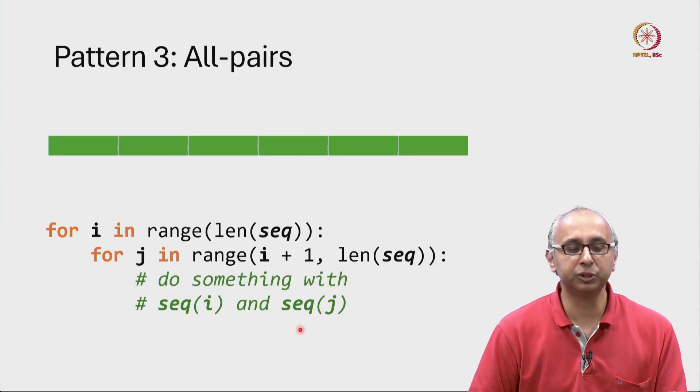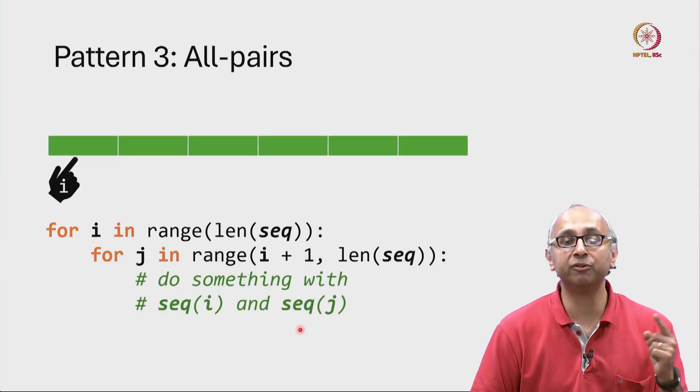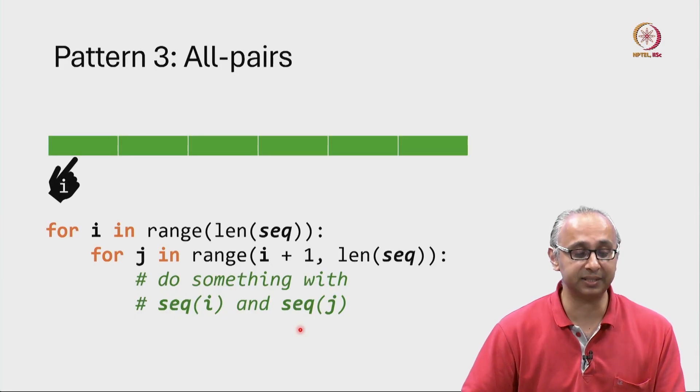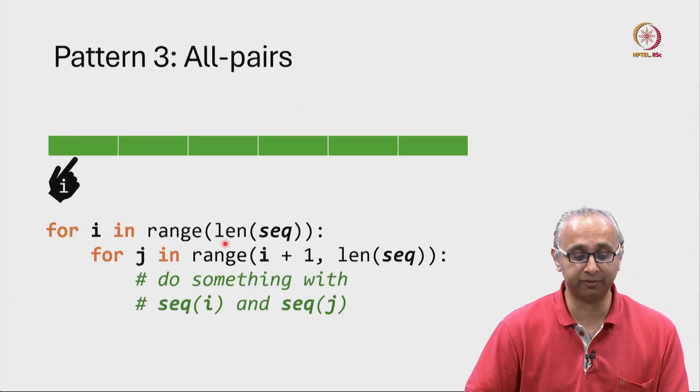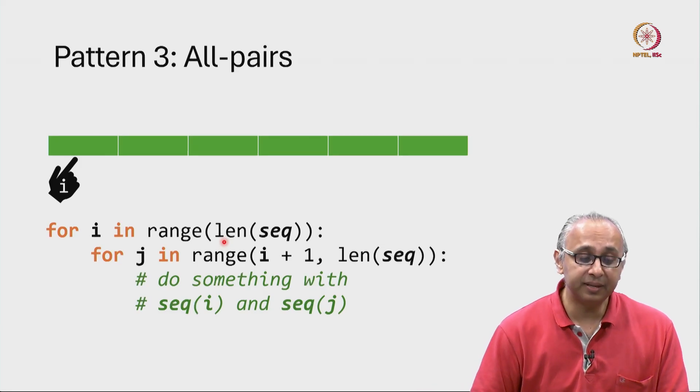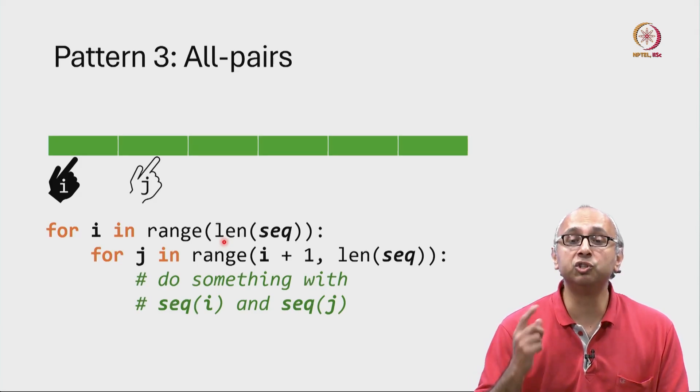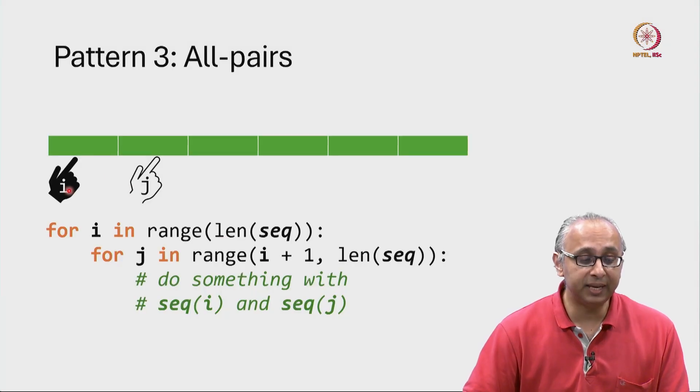So the way I like to think about it is, the outer for loop is maintaining a finger position in this list, starting at the beginning. So I have my I-finger initially pointing at index 0. That is the first value that this range is going to get me. And then I have another finger, the J-finger that is pointing at one location after the I-finger at least to begin with.